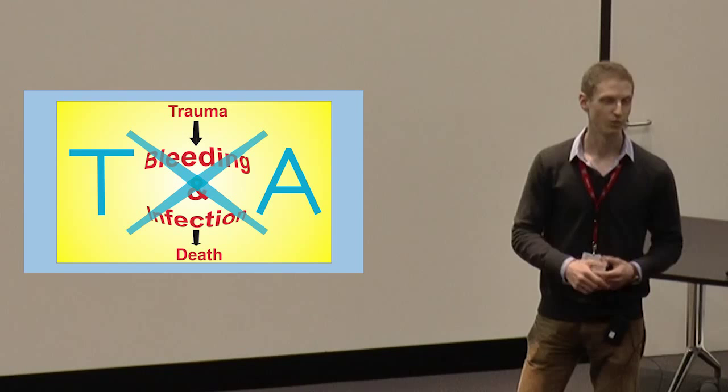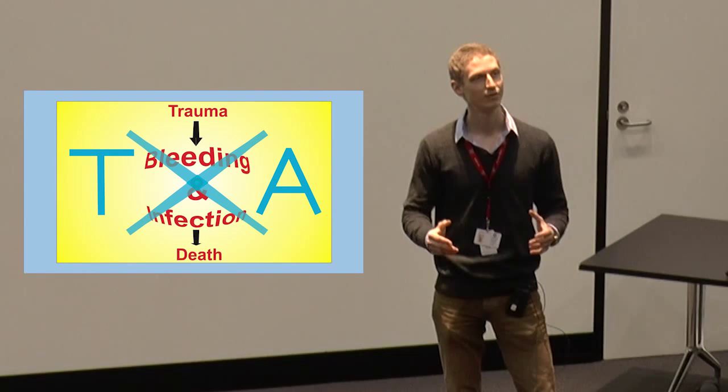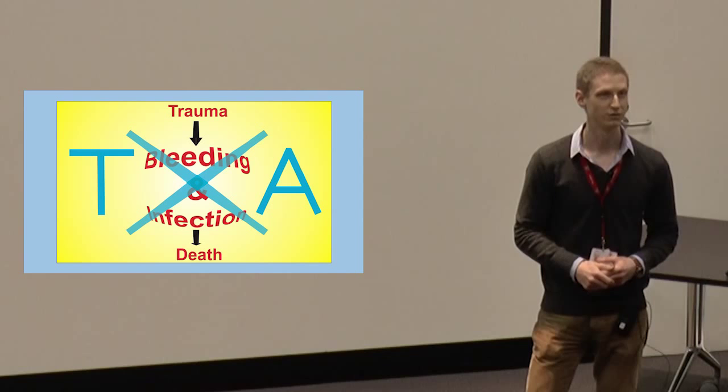We investigated this in a mouse model of traumatic brain injury and found reduced migration of dendritic cells to the lymph nodes after trauma, where the initiation of an immune response would take place. Moreover, those cells were less mature in function.